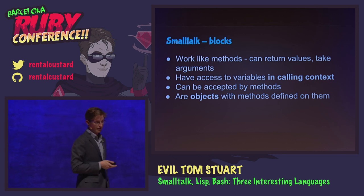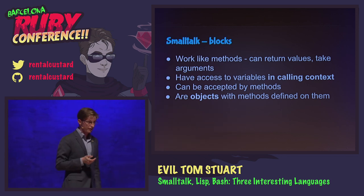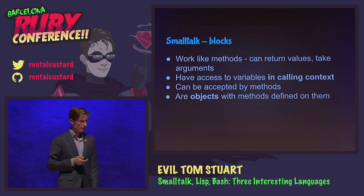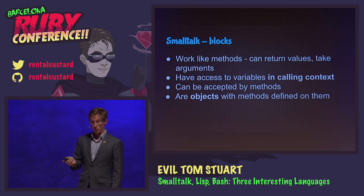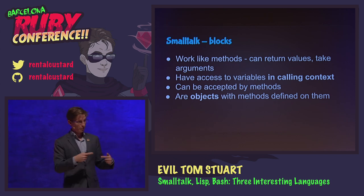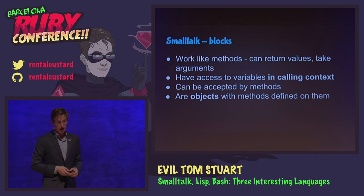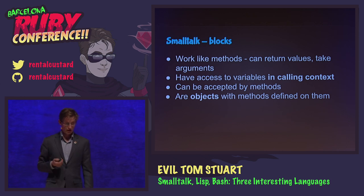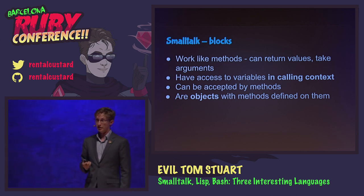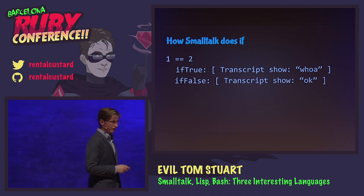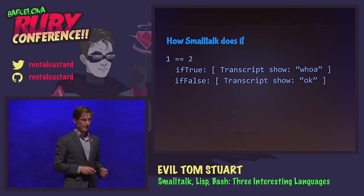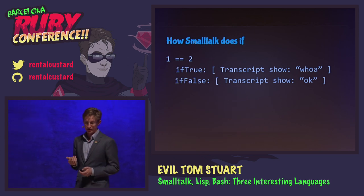The last important concept in Smalltalk is blocks. They work a lot like methods — they can return values and take arguments, and they have access to the variables in the calling context. When you pass a block, you've still got all the variables from that scope available in it. They can be accepted by methods. And the thing about blocks in Smalltalk, like pretty much everything else, is that they're objects with methods defined on them. Importantly, the method on block is 'value', which runs the block and gets the result out.